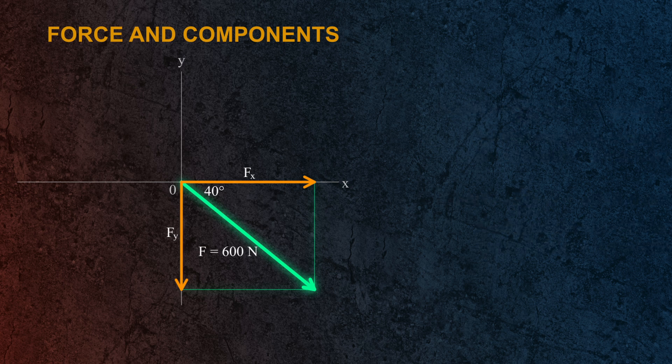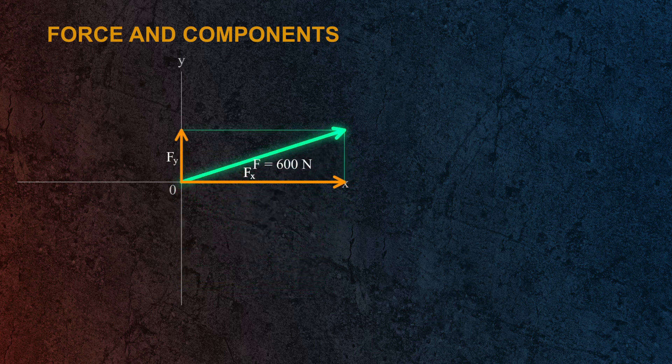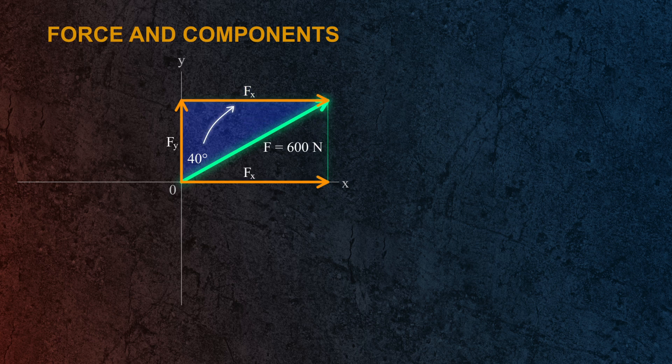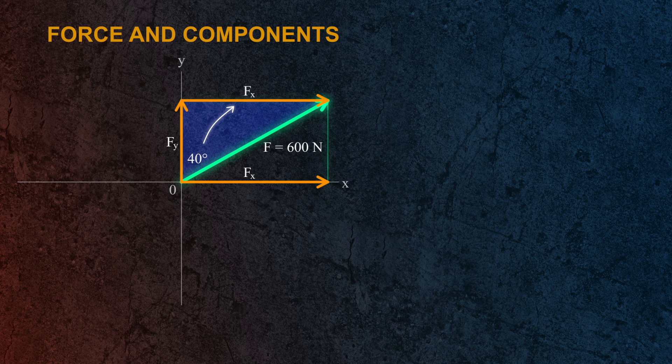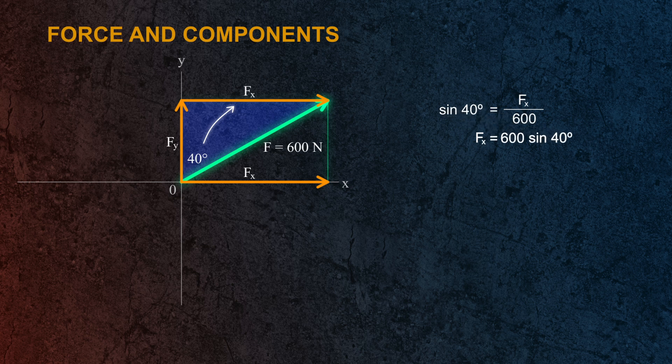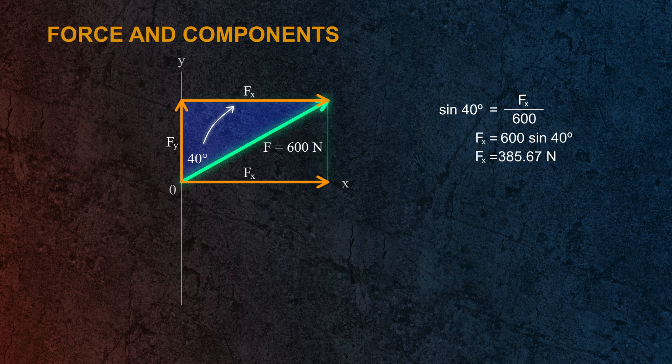For example, let's say we have the same force, 600 newtons, but this time, the angle is 40 degrees from the y axis. Now to solve for the x component, let's take a look at the right triangle again. Since the given angle is opposite to the x component, therefore we will use sine. So sin 40° equals Fx divided by 600 newtons. Or Fx is equal to 600 newtons times sine of 40 degrees. So Fx is equal to 385.67 newtons.